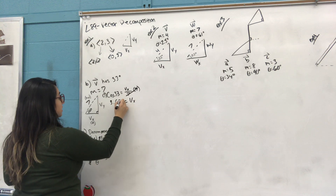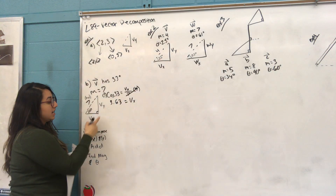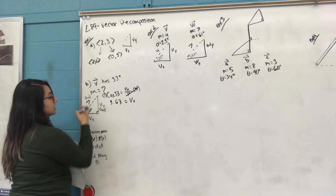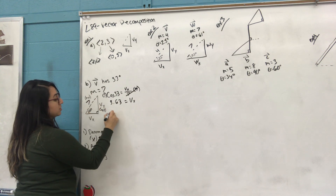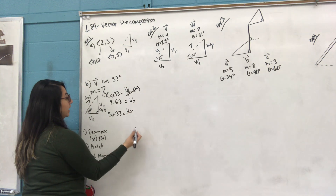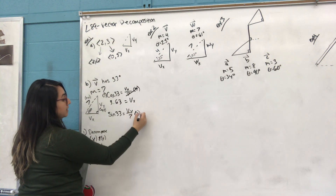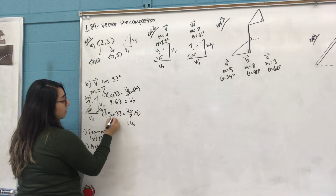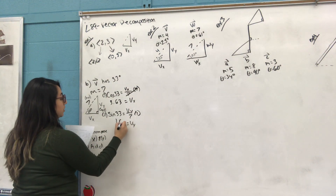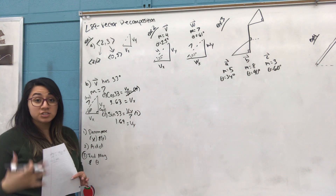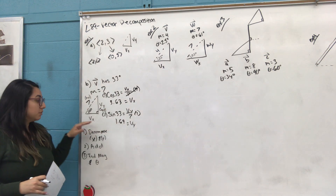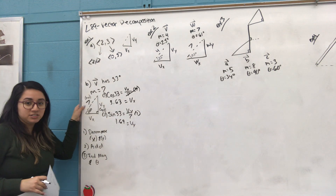Now for Y: according to the 33-degree angle, Y is the opposite side and 7 is the hypotenuse, so we use sine. Sine of 33 equals V sub Y over 7. Multiply both sides by 7 — sine of 33 times 7 gives you about 1.69. If you're off by one or two tenths that's fine, but if you're off by a couple digits that's completely wrong. Now we have our X and Y, so we've decomposed the vector.